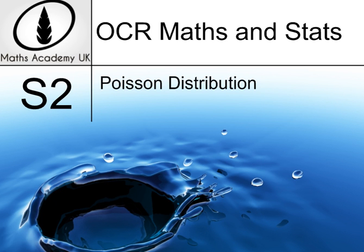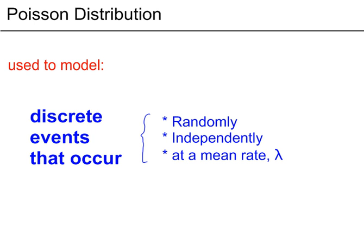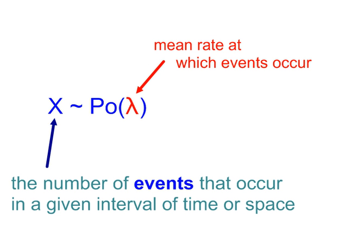The Poisson probability distribution can be used to model discrete events that occur randomly, independently of each other, at a mean rate lambda. X is a discrete random variable giving the number of events that occur in a given interval of time or space, and lambda is the mean rate at which events occur.